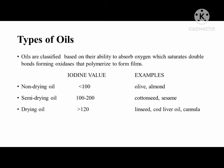Using the iodine value, oils are classified based on their ability to absorb oxygen, which saturates double bonds forming oxidases that polymerize to form films. Oils having less than 100 iodine value are known as non-drying oils, which include olive and almond oils. Oils with iodine value ranging from 100 to 120 are semi-drying oils, including cottonseed and sesame oils. Lastly, drying oils have an iodine value above 120 and include linseed, cod liver oil, and canola.